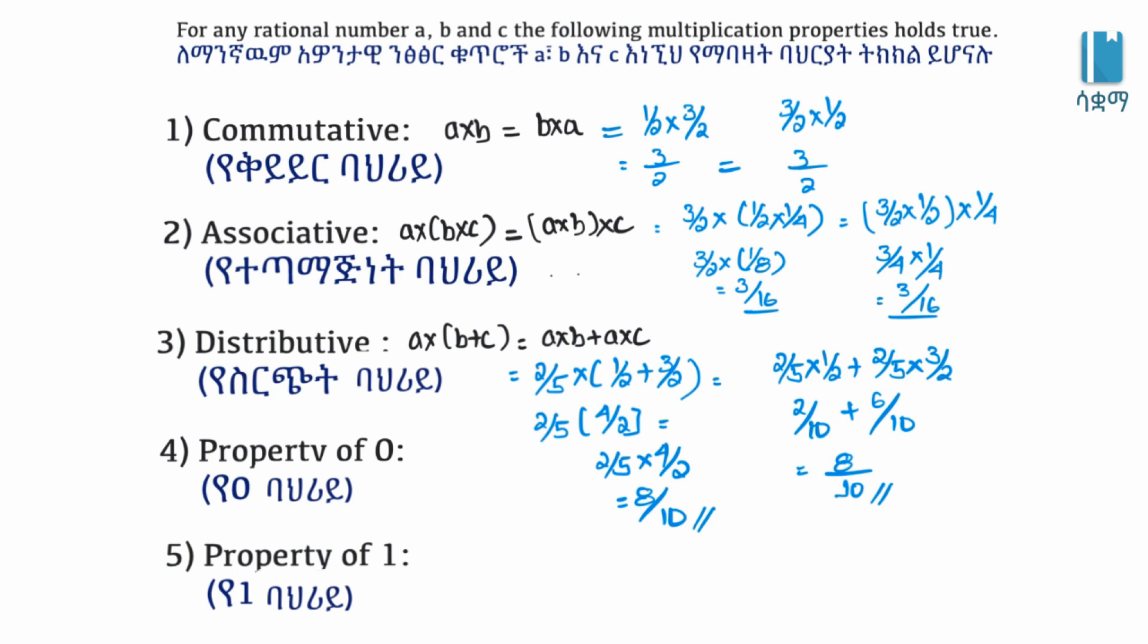Property of 0: Let's say A times 0 equals 0 times A, which equals 0. When you multiply any number by 0, you get 0. This is the property of 0.